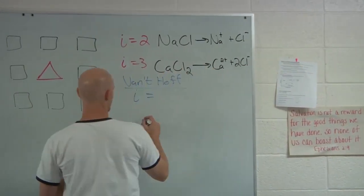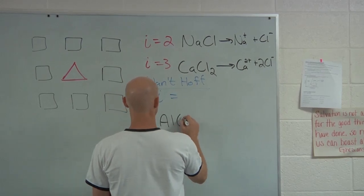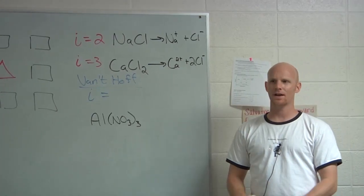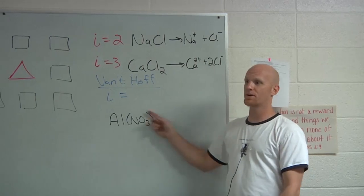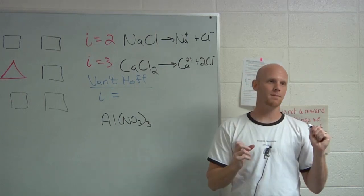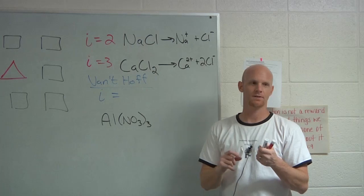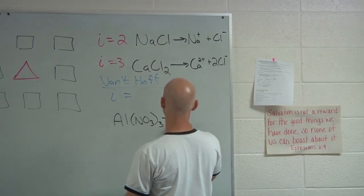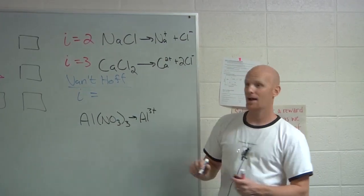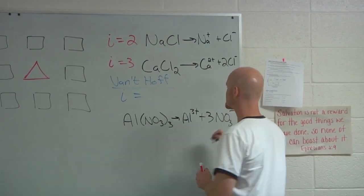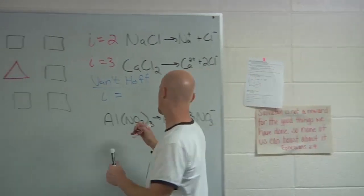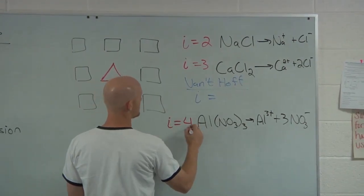This can get a little tricky — consider aluminum nitrate. A lot of students just start counting up all the atoms present, but with a polyatomic ion you can't do that. The polyatomic ion doesn't itself break up. The cation in aluminum nitrate is Al, so you get a single aluminum ion. The anion is nitrate, and you get three of them. So the Van't Hoff factor for aluminum nitrate would be four total ions — don't break up the polyatomics themselves.